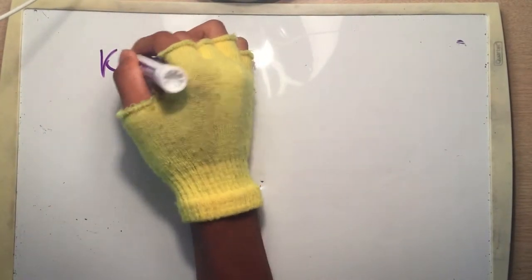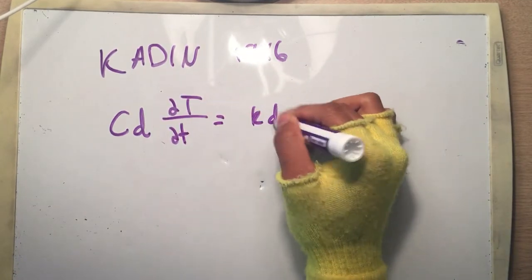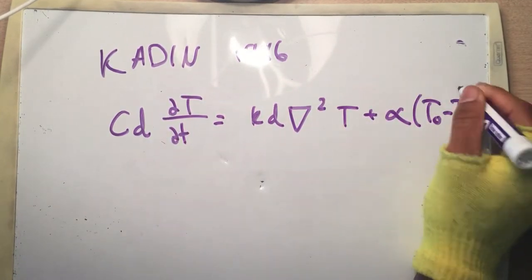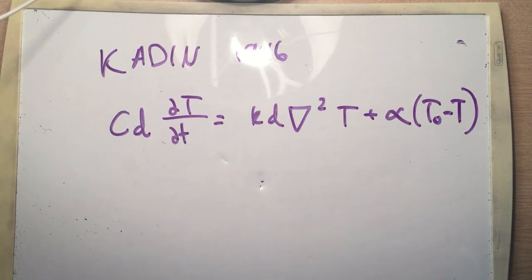A heat flow equation formulated by Alan M. Kadin in 1996 describes the superconducting phenomena. It relates the superconducting nanowire's thickness and heat capacity to the temperature. Here we see that C is the heat capacity, T is the temperature, K is the thermal conductivity, D is the thickness, and alpha is the thermal boundary conductance.